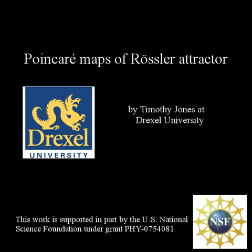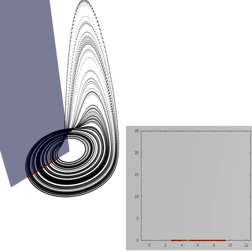Here, we show the evolution of such a map as we rotate an intersecting plane around the z-axis of a Rössler attractor.